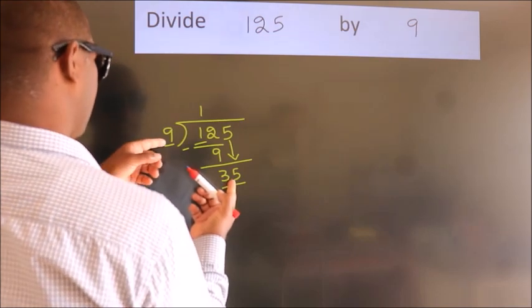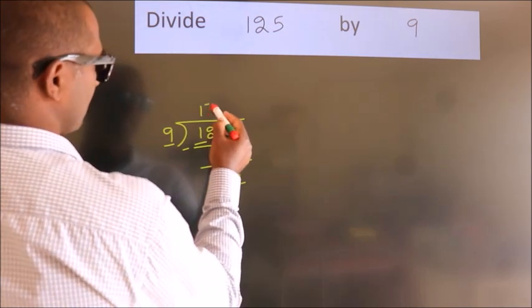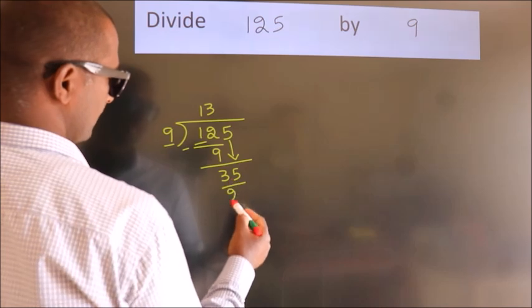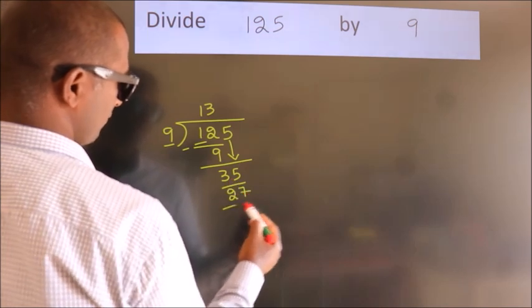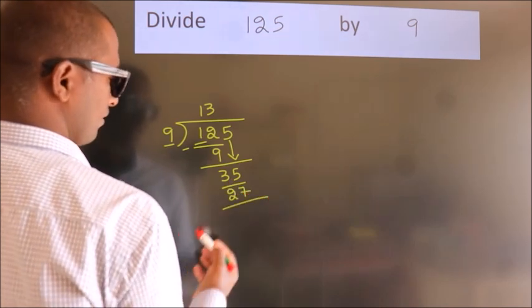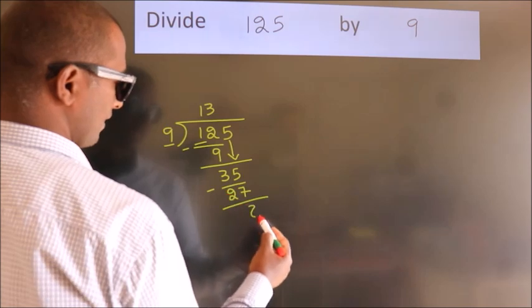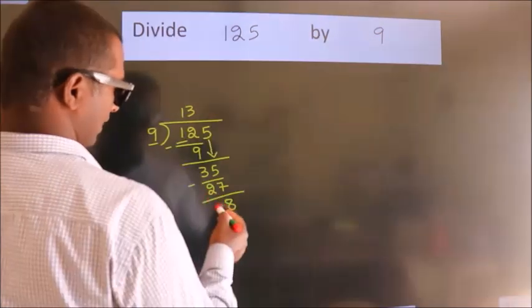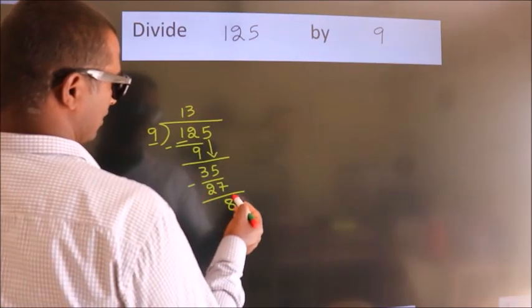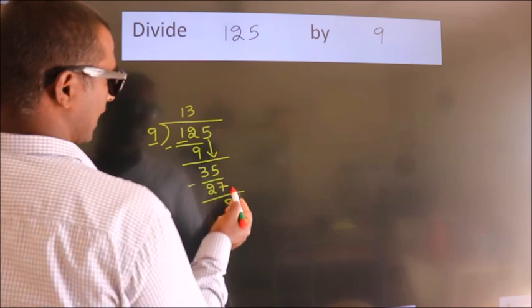9 threes is 27. Now we subtract. We get 8. After this, no more numbers to bring down.